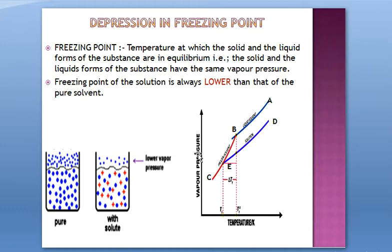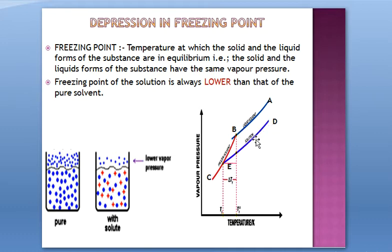Let's take a look at this plot — a plot of vapor pressure versus temperature. You can see curves at all temperatures: curve A–B is the liquid phase of the solvent, B–C is its solid phase, and D–E is the curve of the solution. At all temperatures, you can clearly see that the vapor pressure of the solution remains less than that of the solvent, which automatically affects its freezing point.